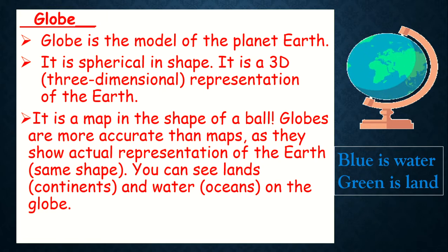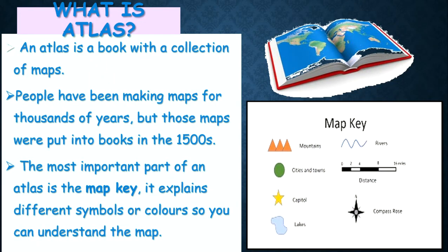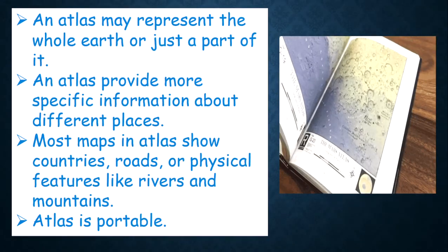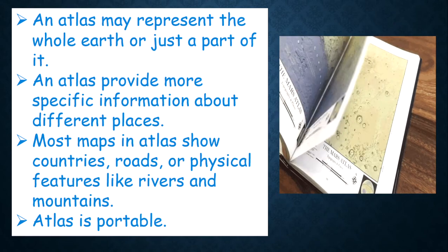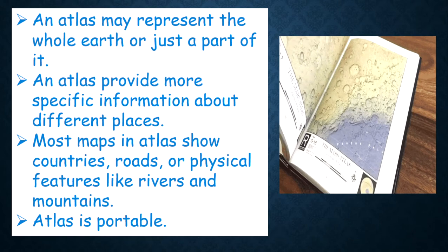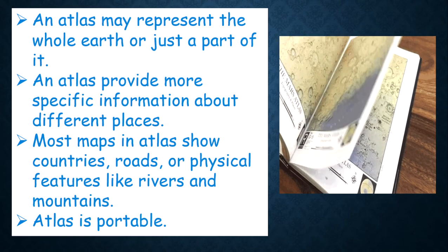What is an atlas? An atlas is a book with a collection of maps. People have been making maps for thousands of years, but those maps were put into books in the fifteens. The most important part of an atlas is the map key — it explains different symbols or colors so you can understand the map. An atlas may represent the whole Earth or just a part of it, and atlases provide more specific information about different places.